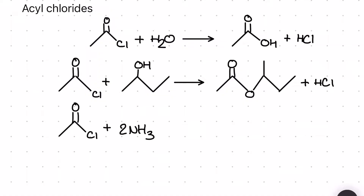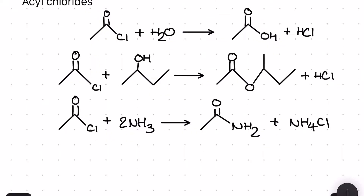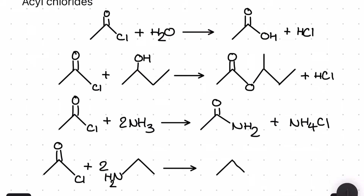For the third reaction, excess ammonia reacts with the acyl chloride to produce an amide — make sure you can tell amides apart from amines — and we also make some ammonium chloride salt. For the final reaction, the acyl chloride reacts with a primary amine to make a secondary amide, where the nitrogen still has one H, and we also make an amine salt.